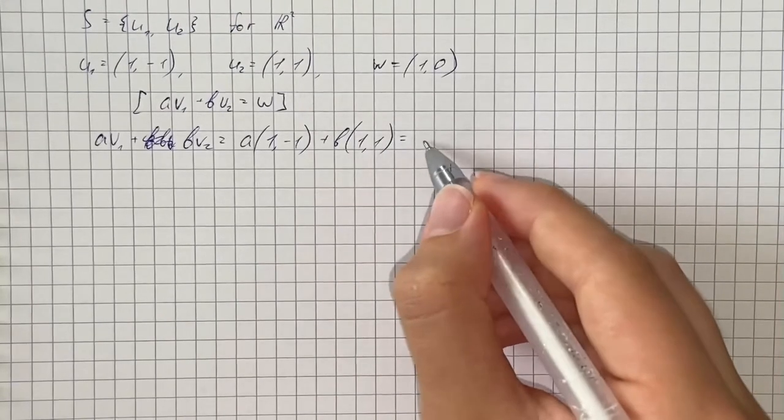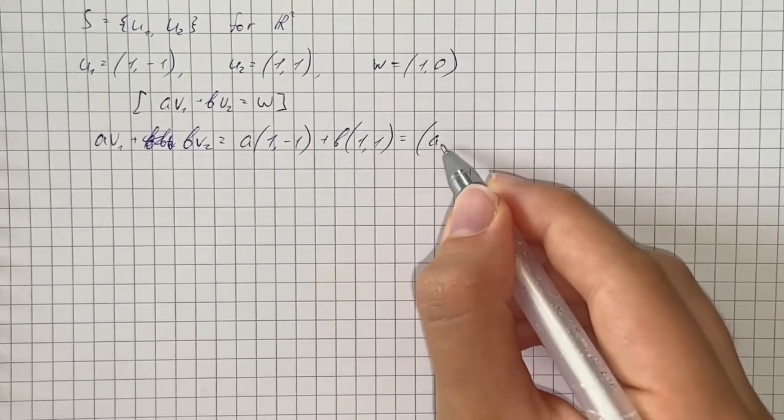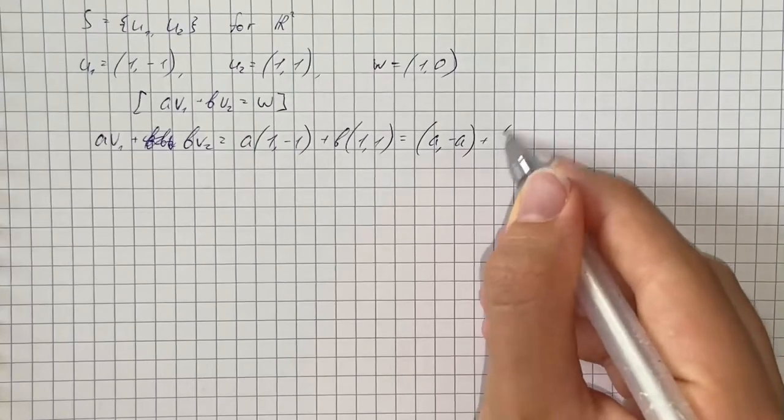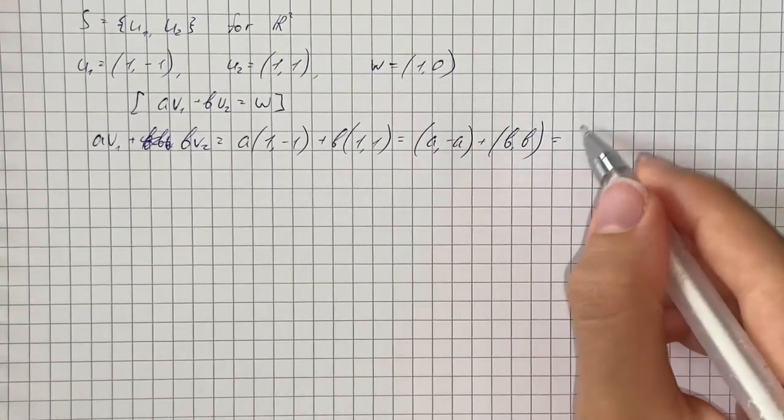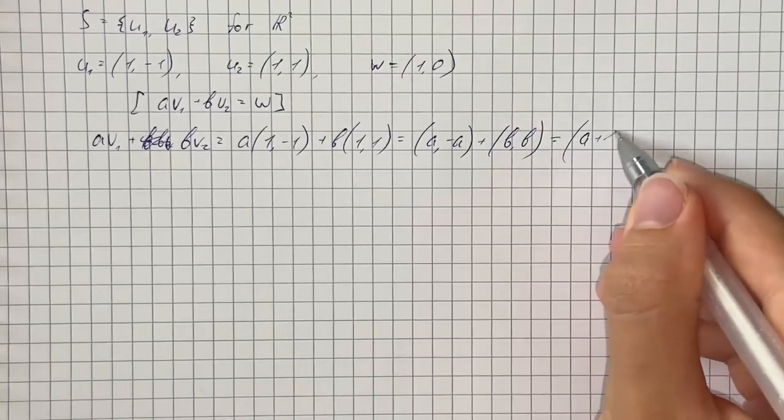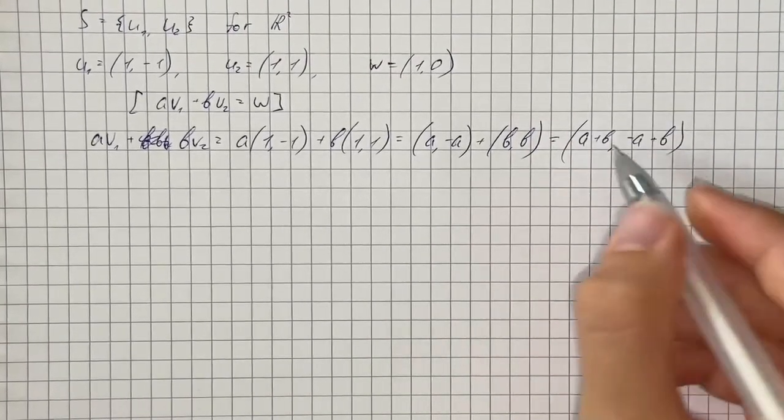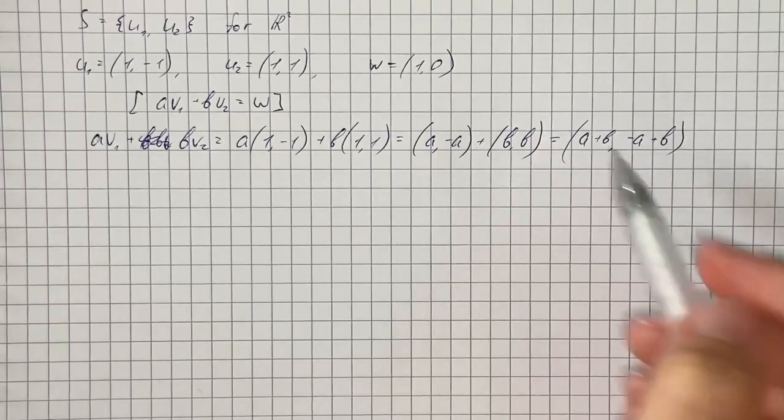If we multiply we get (A, -A) plus (B, B) which equals vector (A + B, -A + B) which is the same thing as W.